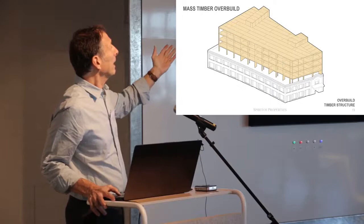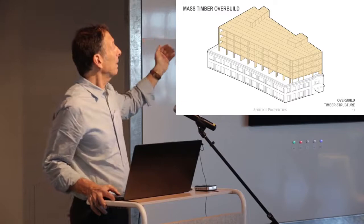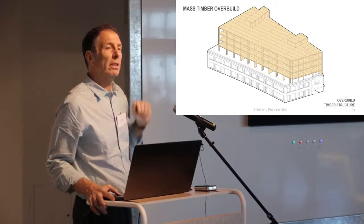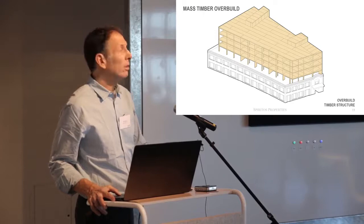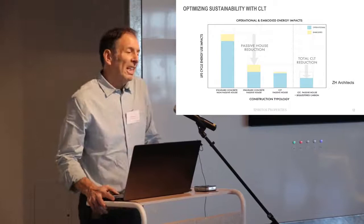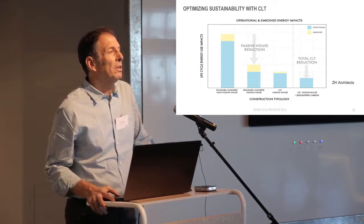But then put the CLT floors and bring it all the way up to the top. So that's four floors on top of a two-story steel frame building without having to increase the foundations or the strength of the existing steel system.